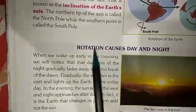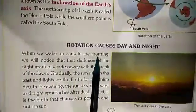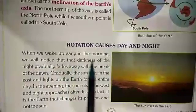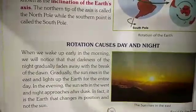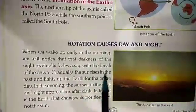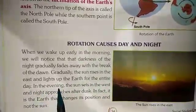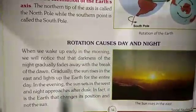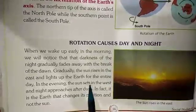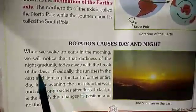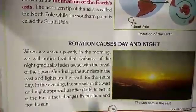The next topic is rotation causes day and night. When we wake up early in the morning, we notice that the darkness of the night gradually fades away with the break of the dawn. Gradually, the sun rises in the east and lights up the earth for the entire day. In the evening, the sun sets in the west and night approaches after dusk. In fact, it is the earth that changes its position and not the sun.